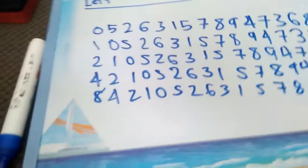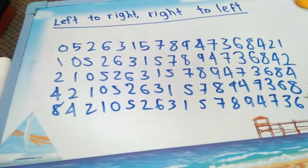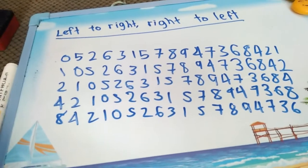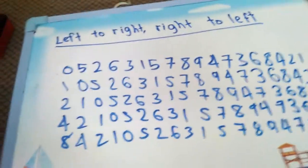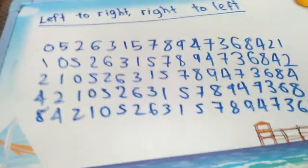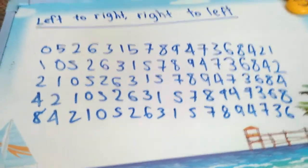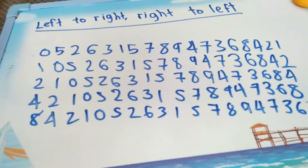So this is n, 2n, 4n, 8n, and 16n. These are all the 18 multiples of 5, 2, 6, 3, 1, 5, 7, 8, 9, 4, 7, 3, 6, 8, 4, 2, 1. We have covered n, 2n, 4n, 8n, and 16n multiples. If you like this video, I'll see you next time, bye bye.